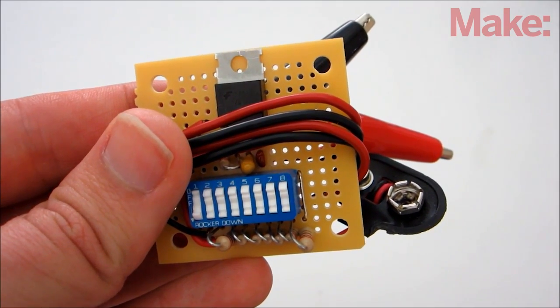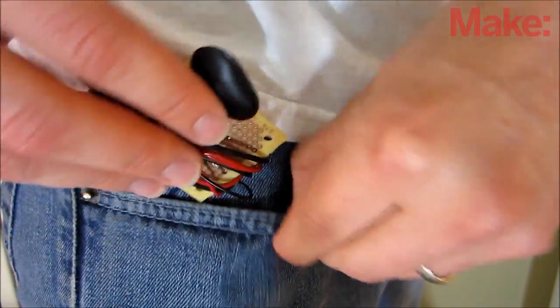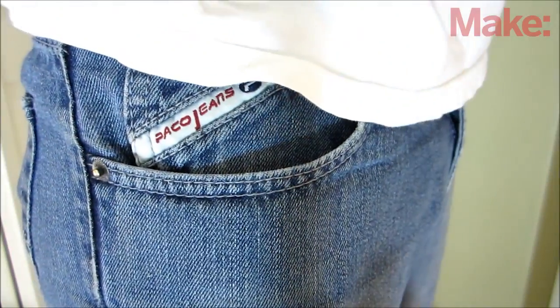This system is a lot more convenient to carry around with you. Just wrap the wires and the battery connector around the circuit board and it will easily fit in your pocket.